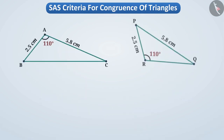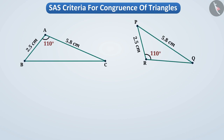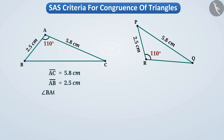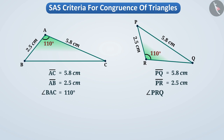Let us look at two more triangles. In triangle ABC, side AC is equal to 5.8 cm, side AB is equal to 2.5 cm, and angle BAC is equal to 110 degrees. In triangle PQR, side PQ is equal to 5.8 cm, side PR is equal to 2.5 cm, and angle PRQ is equal to 110 degrees.